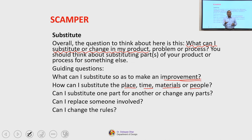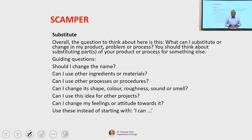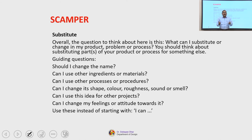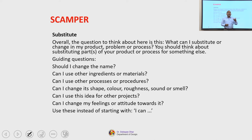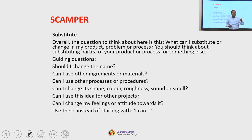Further questions include: should I change the name of the product? Can I use other ingredients or materials, other processes or procedures? Can I change the shape, color, roughness, sound, smell or any visual characteristics? These questions come from the perspective of industrial product design, since SCAMPER was originally used for industrial product design — but they can be adapted for software products or graphical user interface products as well, by replacing industrial product characteristics with relevant software attributes.